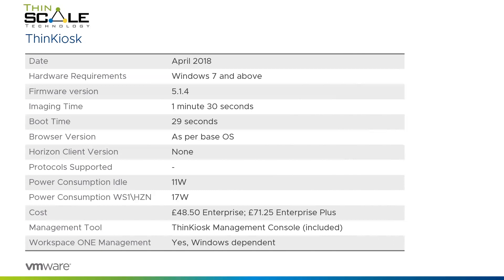Via the ThinScale management tool you can configure it to deliver third-party apps. There's a dash next to protocol support because the Horizon client isn't pre-included, but once you install the latest Horizon client you'll have Blast and PC over IP. Power consumption is very low: 11 watts idle and 17 watts running a session. There's an Enterprise and Enterprise Plus version with varying prices, including the ThinKiosk management console. It's manageable by Workspace ONE — but Windows-dependent — since Workspace ONE supports Windows 10 modern management APIs.